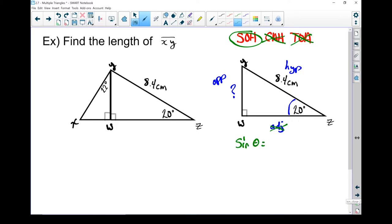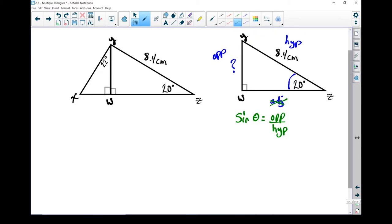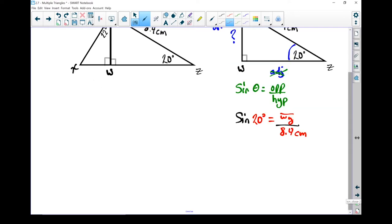Write my formula down. Sine of theta equals opposite over hypotenuse. Let's put in the pieces that we know. I know my angle, so I'm going to put that in. So sine of 20 degrees equals, I don't know my opposite. And because it goes from W to Y, I'm going to call that side WY divided by. And I know my hypotenuse. That is 8.4 centimeters.